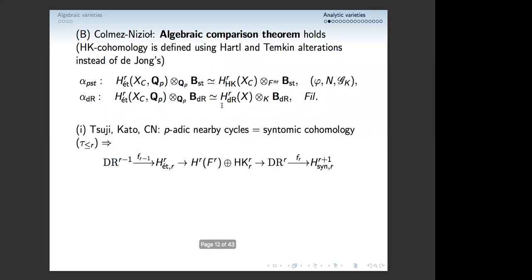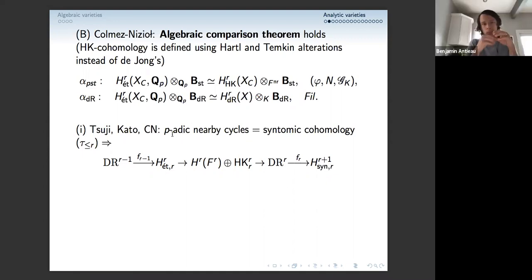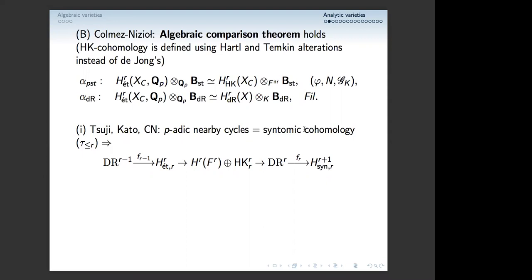We are using the syntomic method to prove this. The first step uses all the results of Tsuji, Kato, and some reinterpretation of them — joint work with Colmez — which showed that p-adic nearby cycles, which is what you are really computing when you compute étale homology here, can be computed by syntomic homology. Syntomic homology is some kind of derived Frobenius eigenspace of crystalline homology — built from de Rham and related objects. This theorem tells you these two things are quasi-isomorphic, but up to a grid condition — a stability condition familiar from Fontaine people, which appears everywhere.